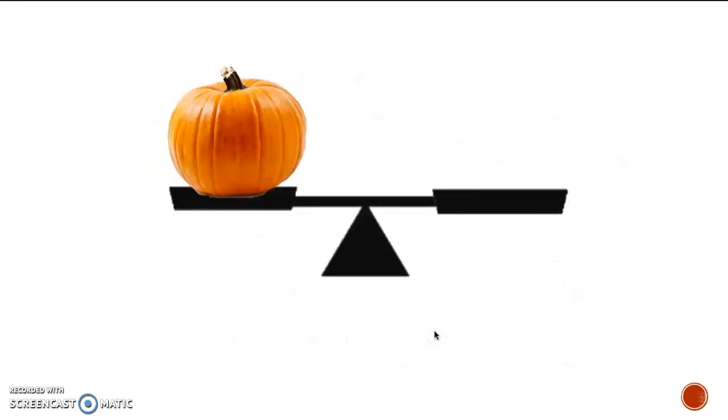So here I have a balance scale, and I have a pumpkin on one side. And I want to see how many of another item I have to fill on the other side in order to make it equal. So I'm going to use some cherries. I have that cherry. One, two, three, four. Four, and then now it's perfectly even across.